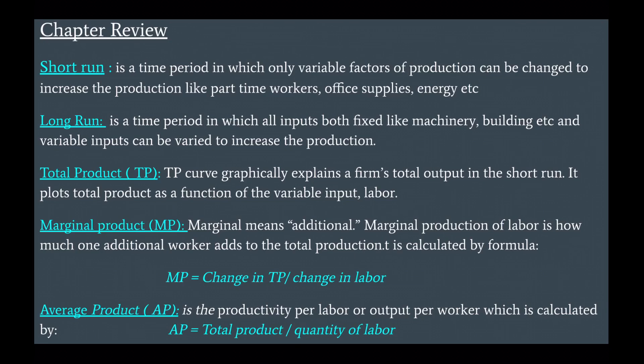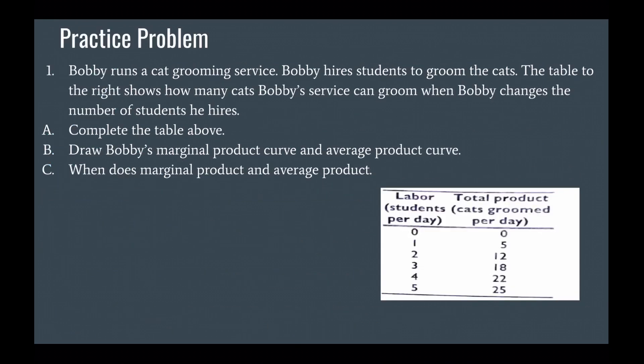Total product graphically explains the firm's total output in the short run; it plots total product as a function of the variable input, labor. Marginal product — marginal means additional — is how much one additional worker adds to total production. It is calculated by the formula: change in total product divided by change in labor. Average product is productivity per worker, or output per worker, calculated by total product divided by quantity.